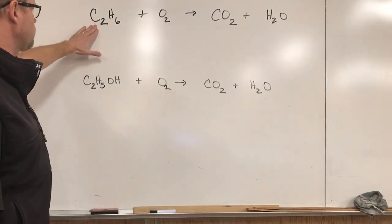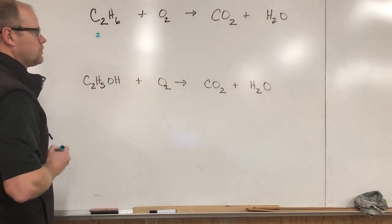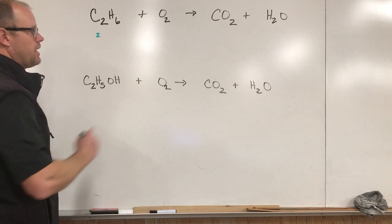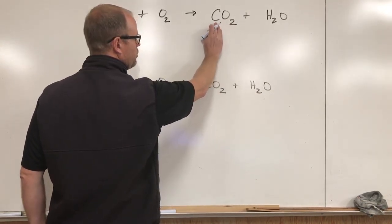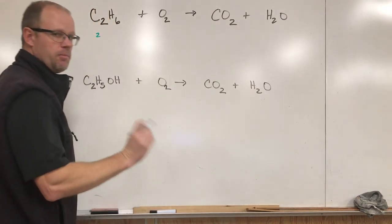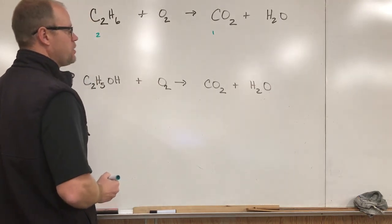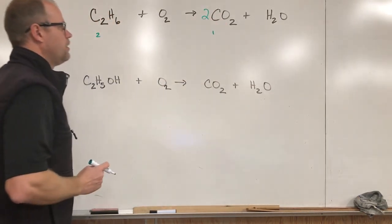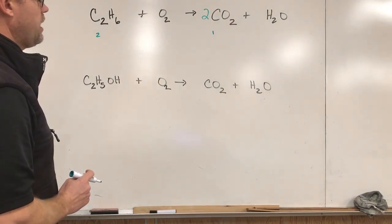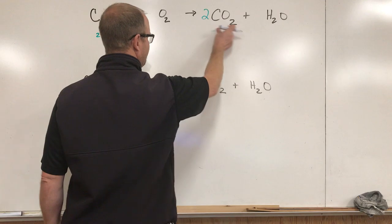Let's start simple and we'll do this methodically. Let's start with one element at a time. Let's take a look at carbons. Right here I've got two carbons so I have to have two carbons on the other side. This two right here only applies to the oxygen, it has nothing to do with the carbon. I'm gonna put a big two in front of carbon dioxide and that gives me two carbons.